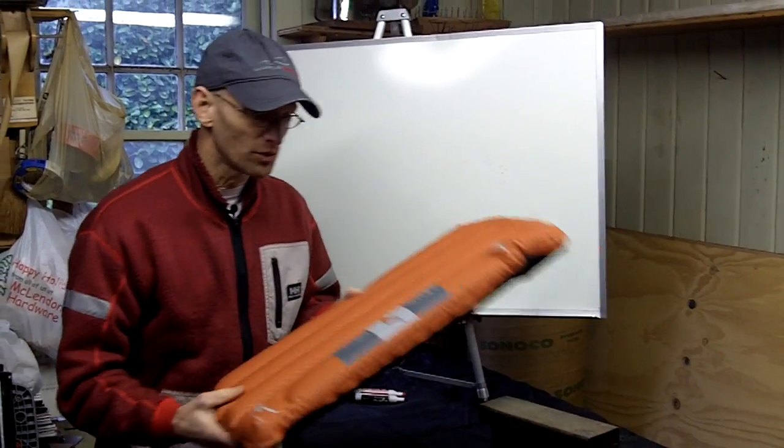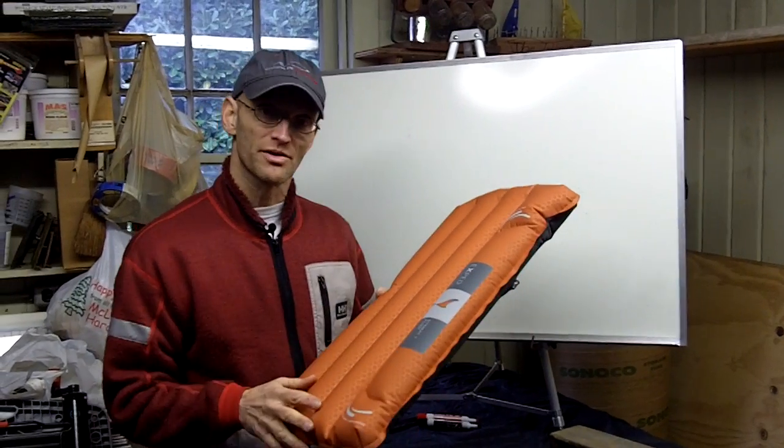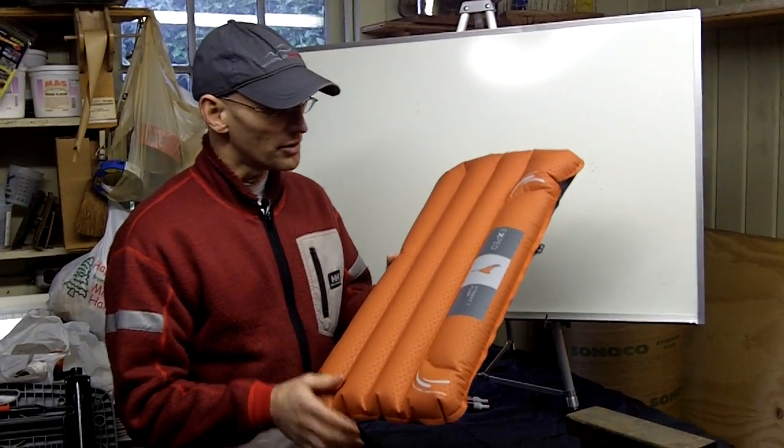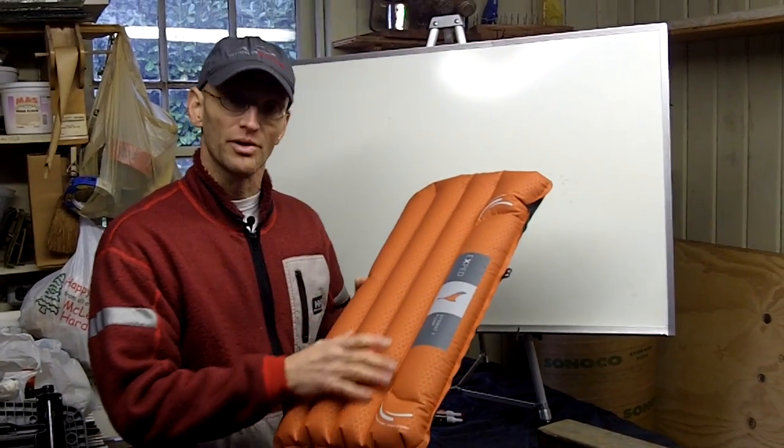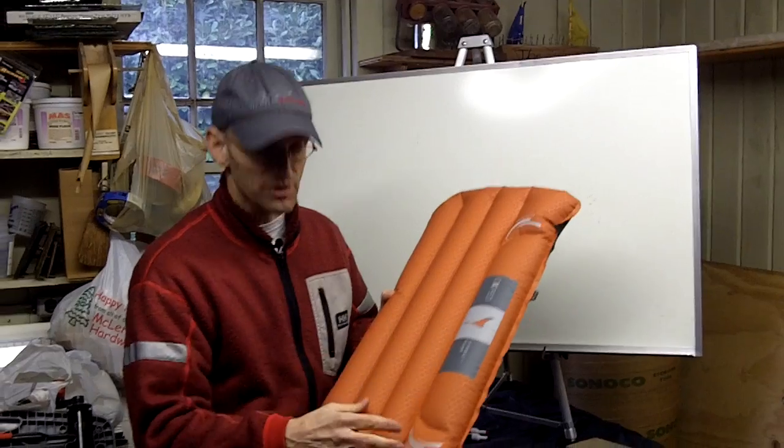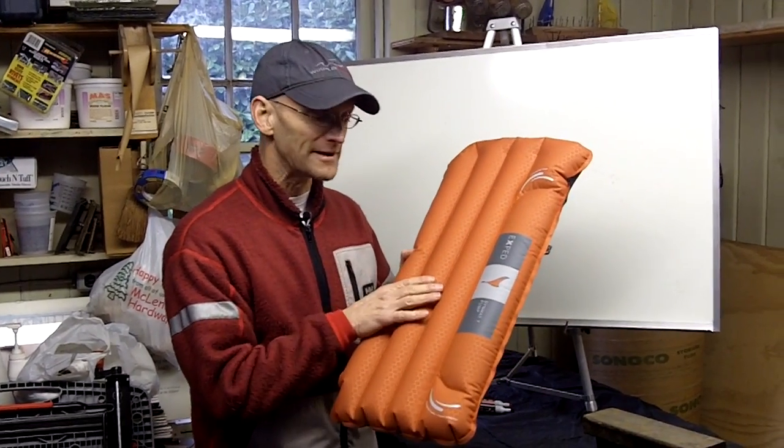Sin mats you'll recognize by their terracotta color, their burnt orange color. It's important to note that our mats are broken up into various chambers. You can see those chambers separated here on this demo mat.